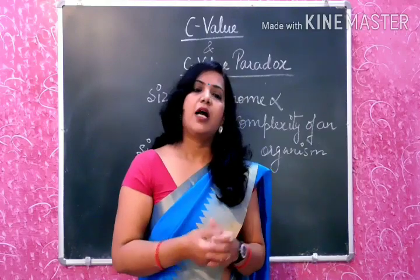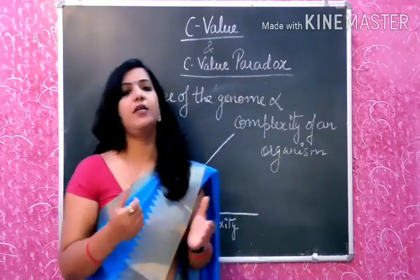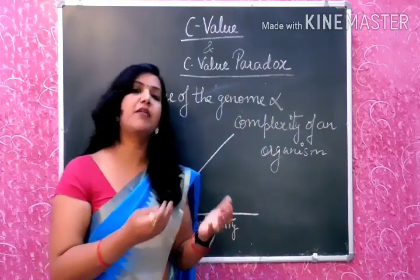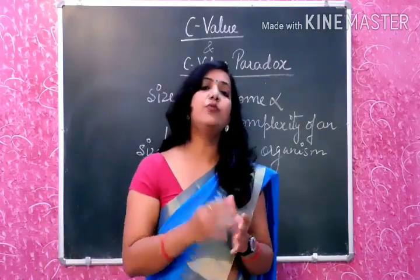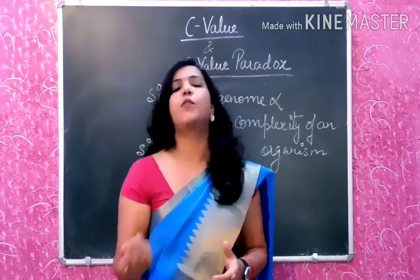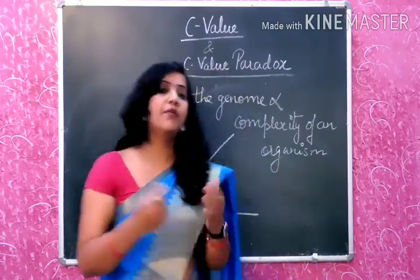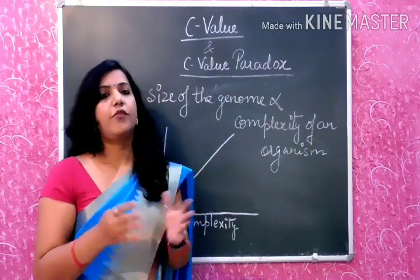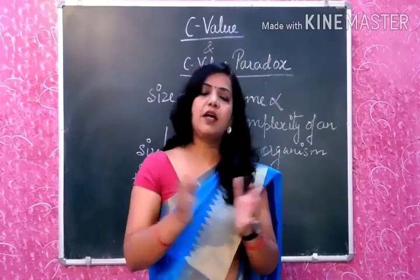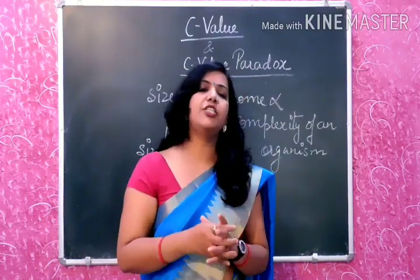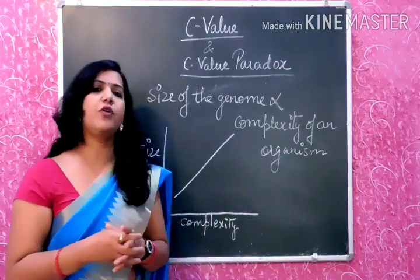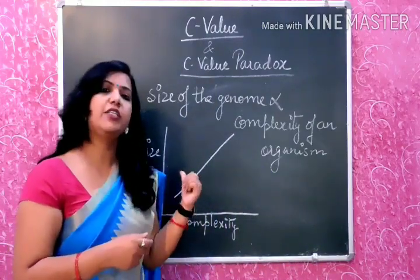For example, the Salamander is a considerably simpler organism compared to human beings, but it has 40 times more genome than Homo sapiens. Similarly, in the case of frog, frog has 7 times more genome than human beings. So there is no direct or linear relationship between complexity of an organism and size of the genome.